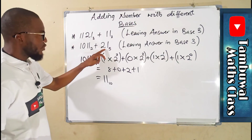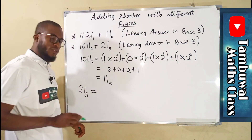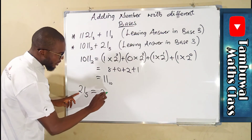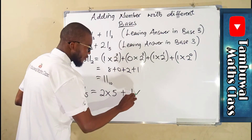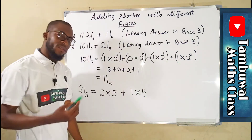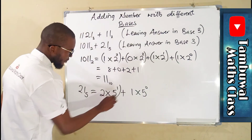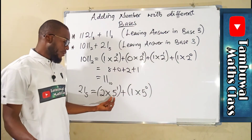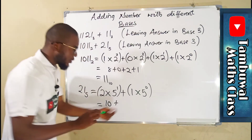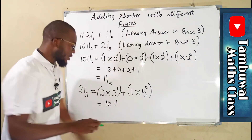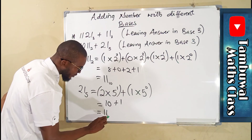Now we take the other number, 21 in base 5, and convert it to base 10 as well. We take the first digit 2, multiply by base 5, add the second digit 1, multiply by base 5. Assigning indices from right to left starting from 0: 5 to the power 1 is 5, times 2 is 10. Plus 5 to the power 0 is 1, times 1 is 1. So this is also 11 in base 10.